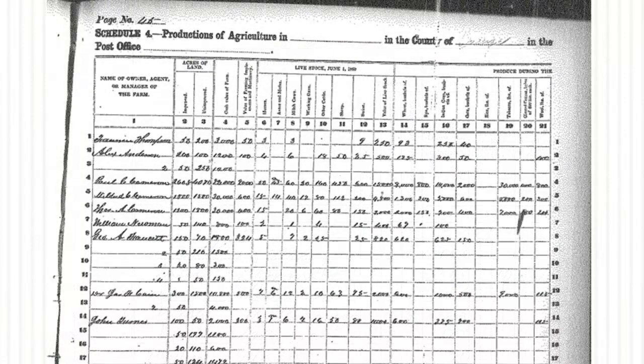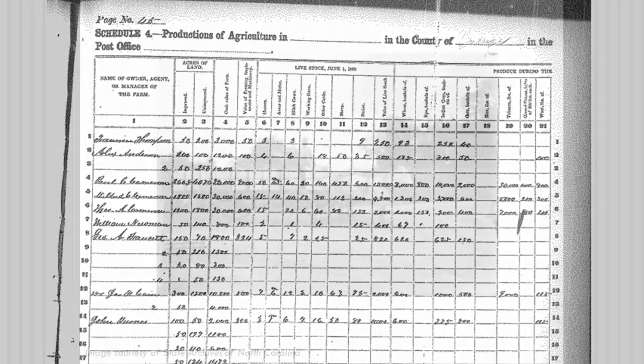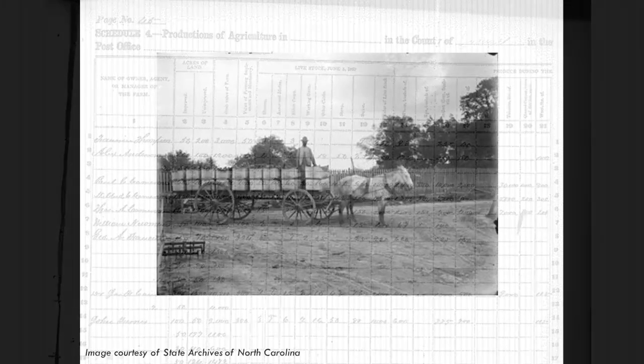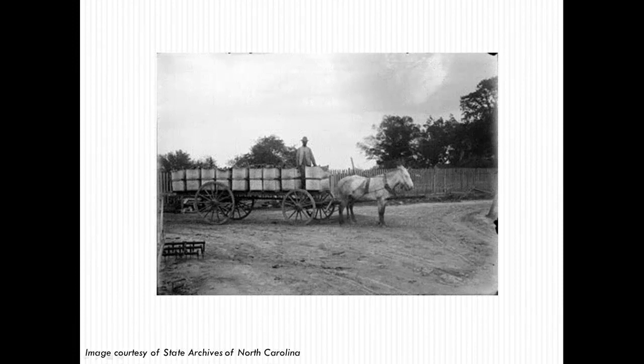For researchers with African American ancestors, the 1850 and 1860 agricultural schedules can give a fuller picture of the slaveholder and or overseer of a plantation's farm production and give you an idea of the work your enslaved ancestor may have done. Also, those African Americans who were free during the antebellum period may have farms that were listed on the schedule.